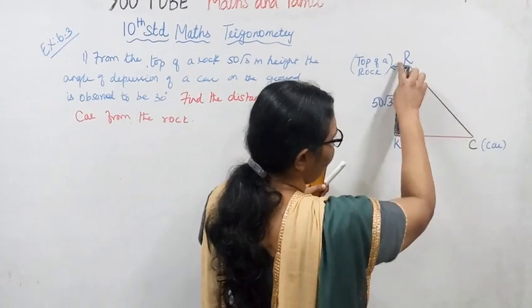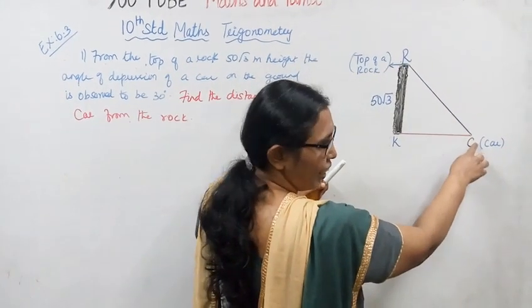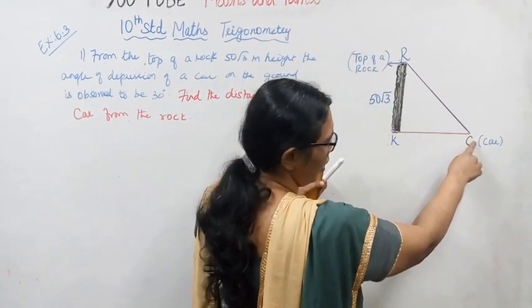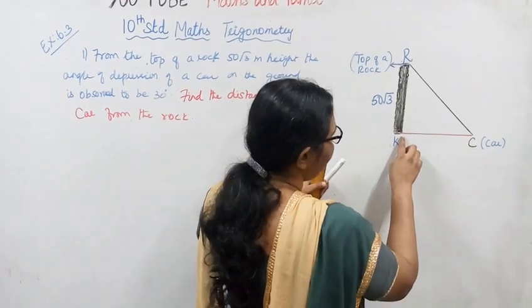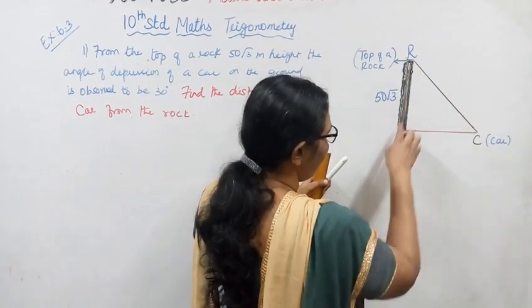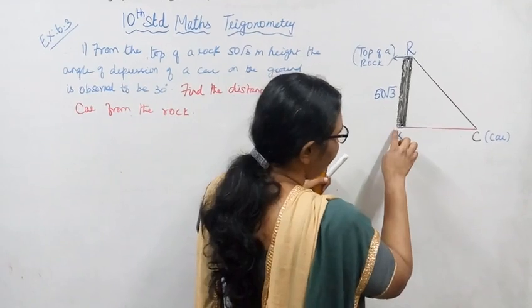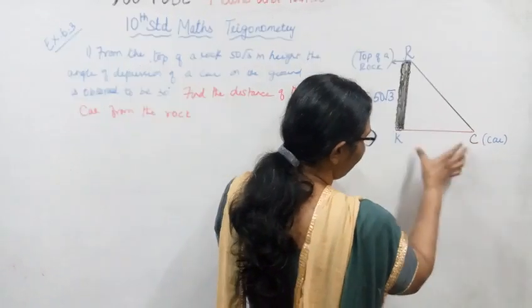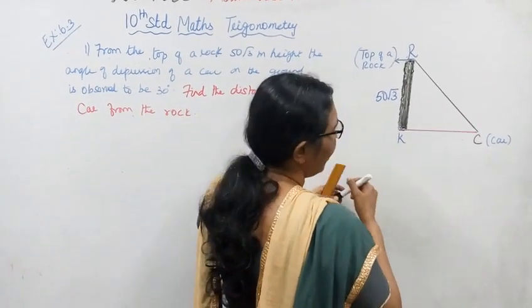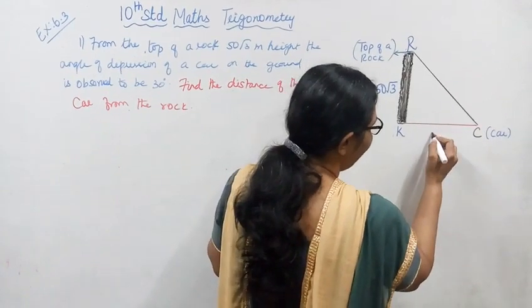So this is the top of the rock, this is the bottom of the rock, and the distance between the rock and the car is what we need to find. This distance is important.